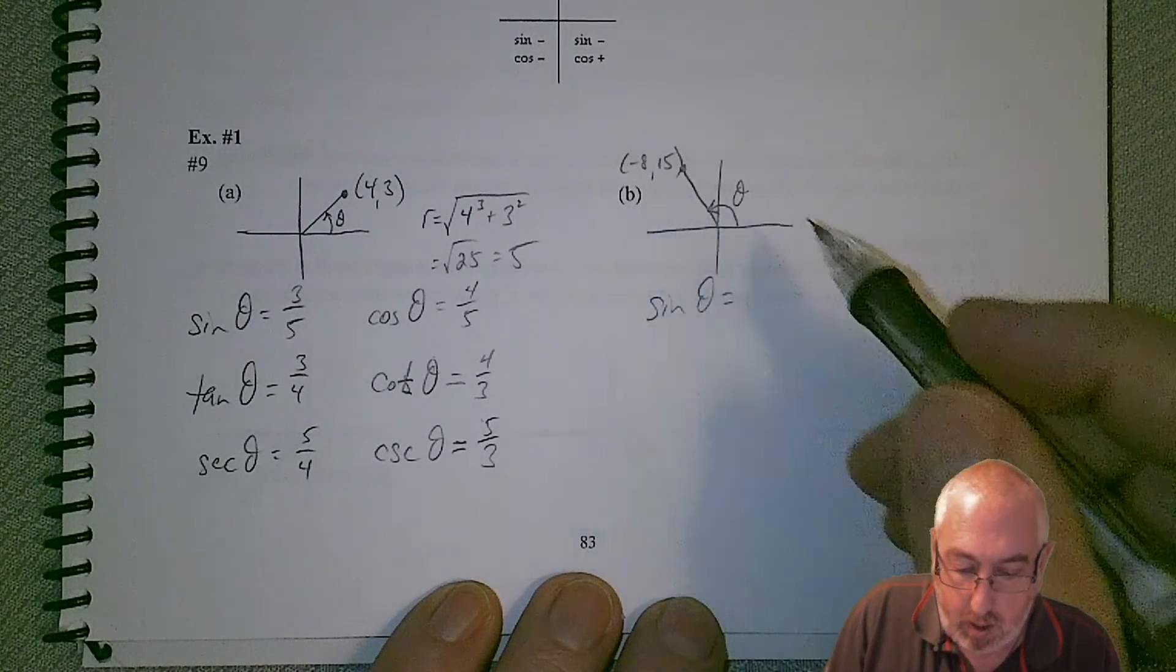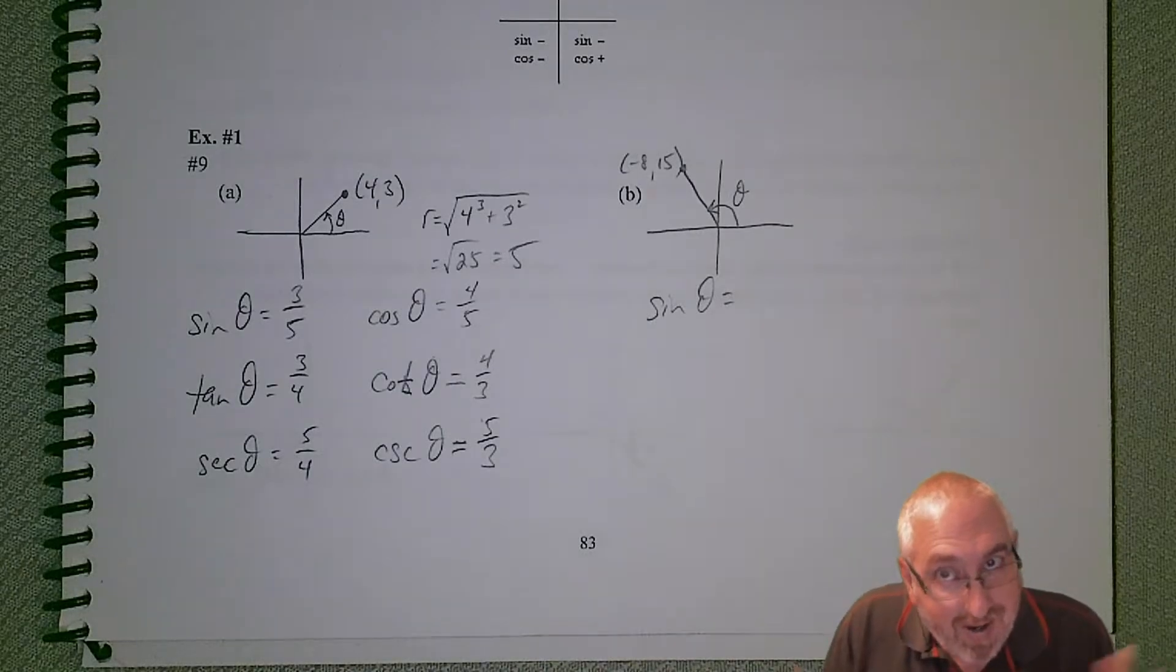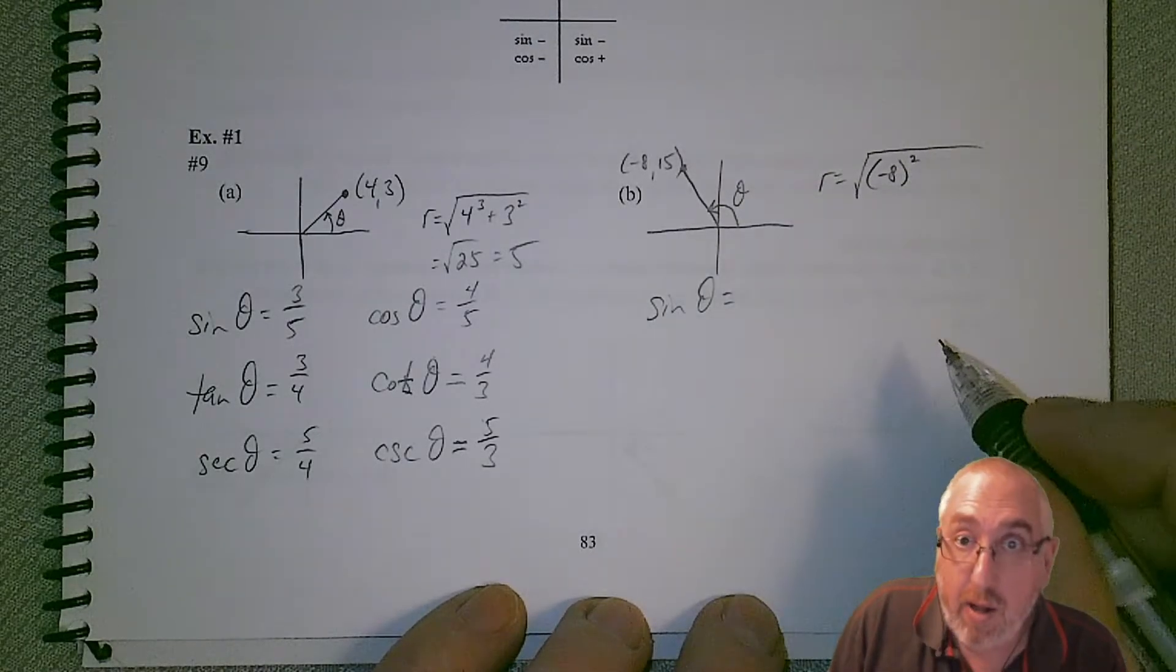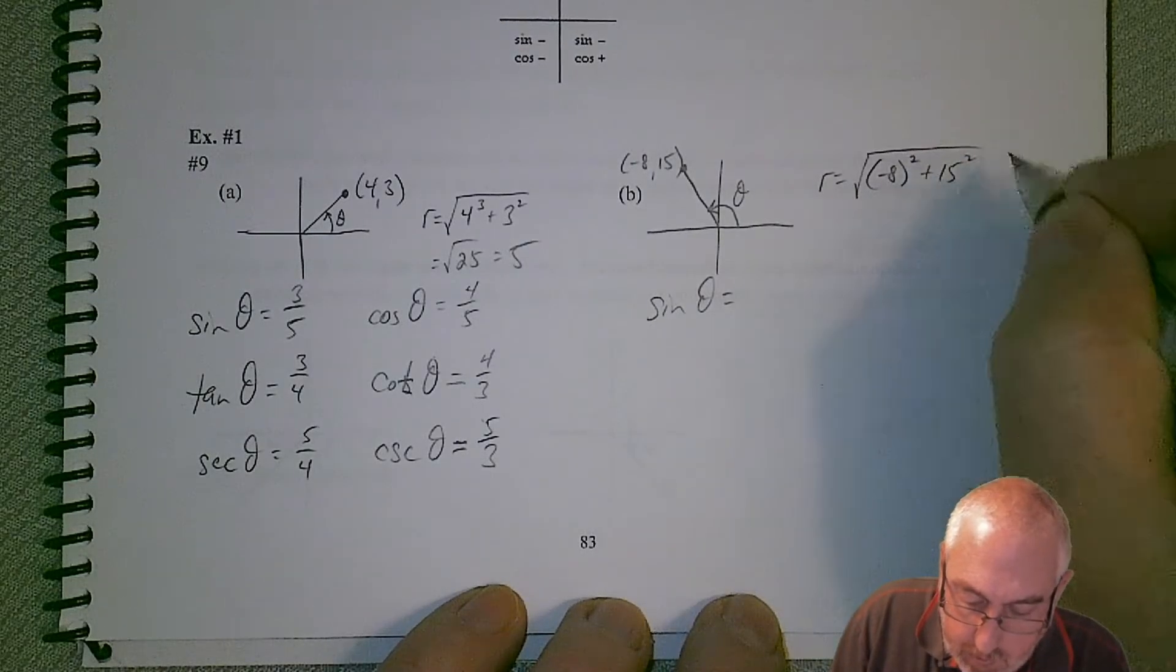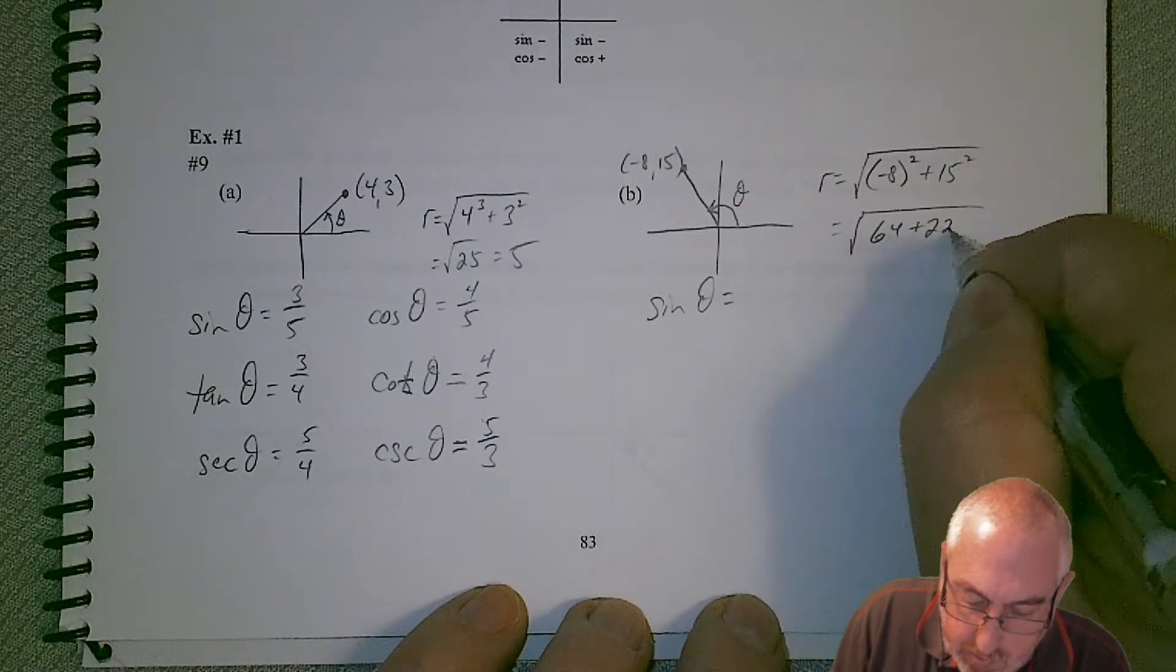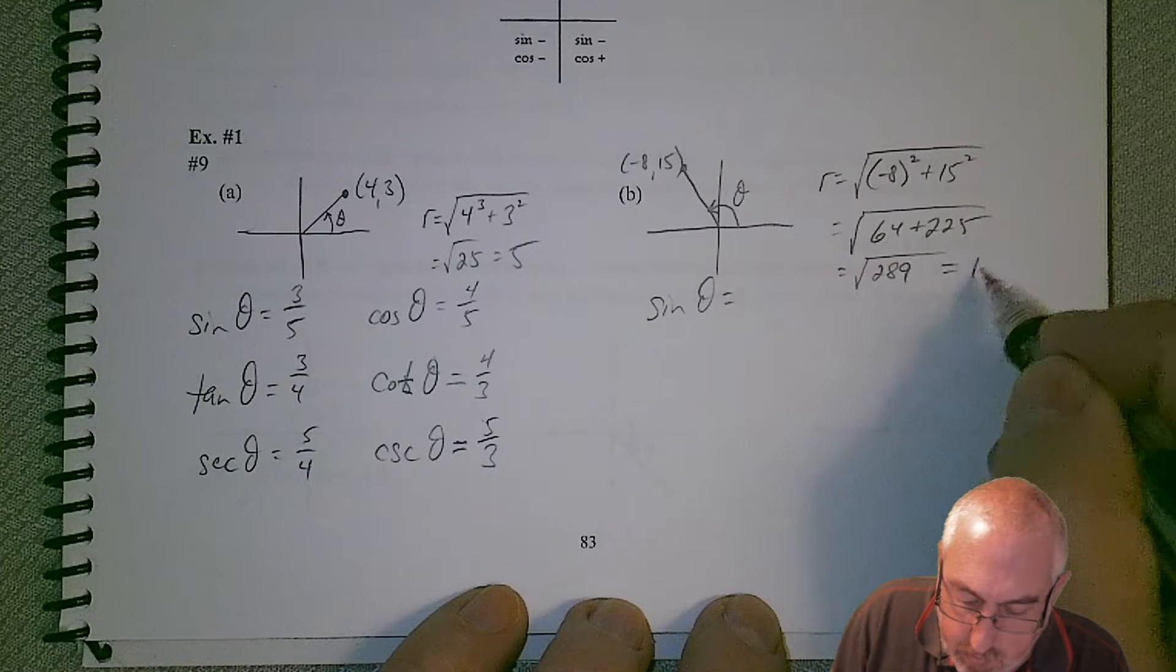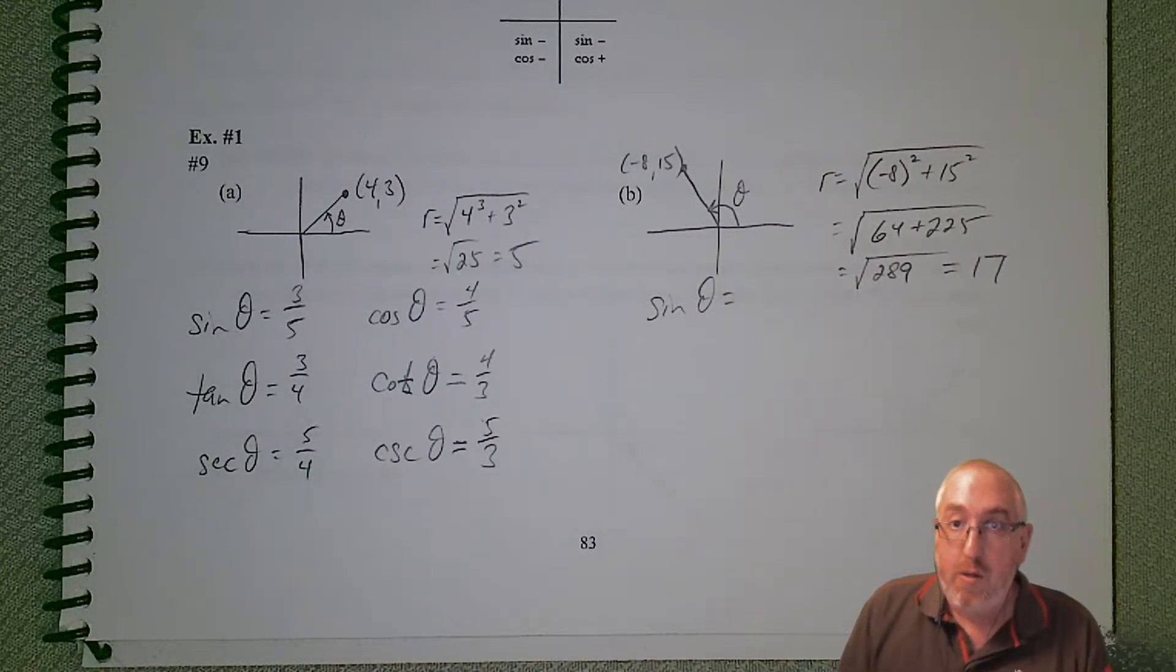We should have our r first. I'm jumping the gun here. So we want to make sure we get r first. Just be careful - the negative is going to be included when you square it, so it changes to positive. If we square root 64 plus 225, looks like square root of 289. If my memory serves me, that might be 17. So now we have r,